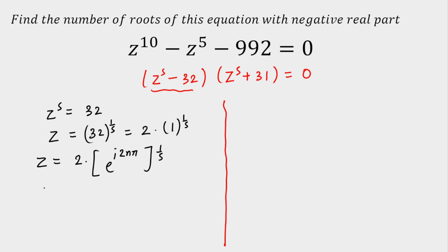So z will be equal to 2 times e raised to power iota 2nπ divided by 5. According to De Moivre's theorem, n varies from 0 to 4 because we are taking the 5th root — after n equals 4, the roots will repeat.